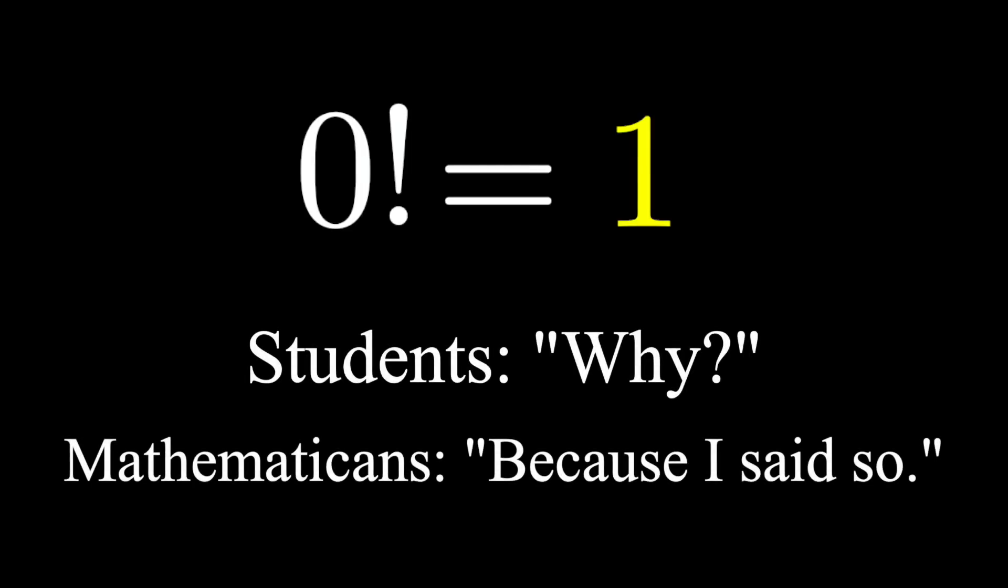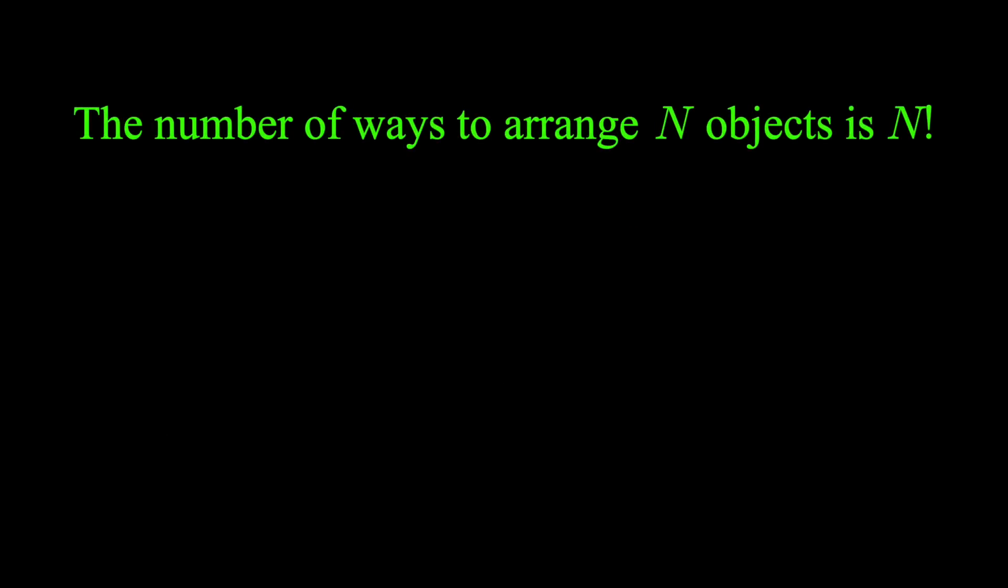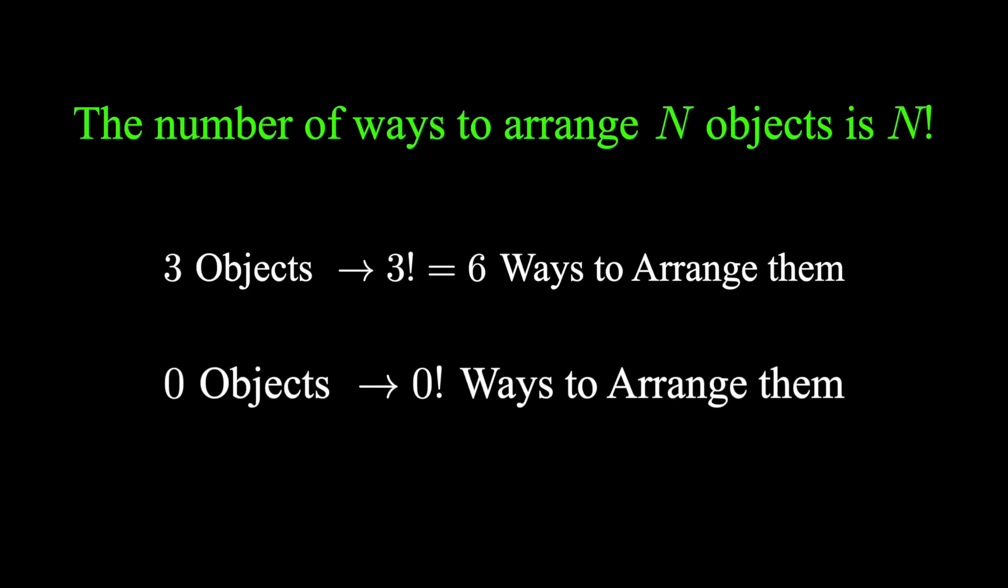One view of factorials is factorial means the number of ways to arrange a number of objects. n factorial means the number of ways to arrange n objects. How many ways are there to arrange 0 objects? Well, there's no way to arrange 0 objects. That is, there's only one way to do it. You don't. So 0 factorial is 1.